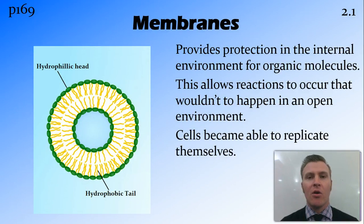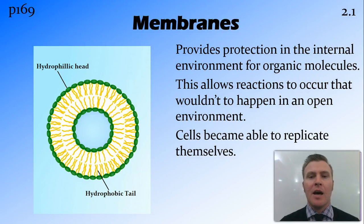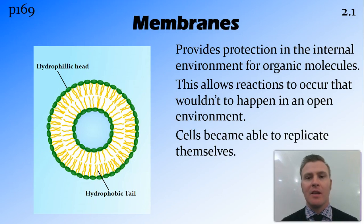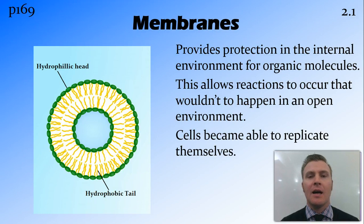The first step to go from there to life is the formation of membranes. Membranes are made of lipids, which have a hydrophilic head and a hydrophobic tail, so they form bubbles. Inside these bubbles there would be an aqueous solution that is trapped, and this internal environment provides protection for the chemical reactions occurring inside, allowing reactions to occur that wouldn't be possible floating around in the prebiotic soup. If these early cells got too big, they would split and replicate.